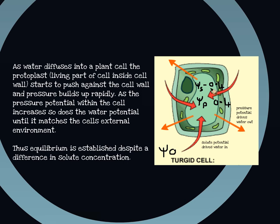So even though this is a hypotonic solution, because the pressure potential has built up, we eventually reach an equilibrium where the pressure potential inside the cell equals that outside. The solute potential inside means water is driven into the cell because it lowers the water potential inside. But as pressure builds up — as the cell tries to expand, pushing on the cell wall, and the cell wall pushes back — that compensates by increasing the water potential inside the cell. This pressure is what gives the cell what we call turgor pressure, and it's what helps prevent a plant from wilting.